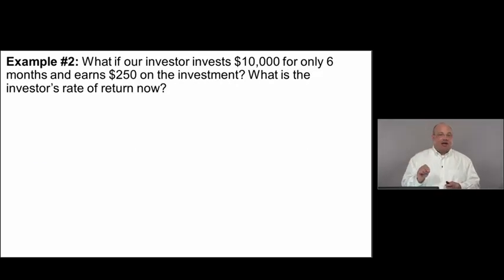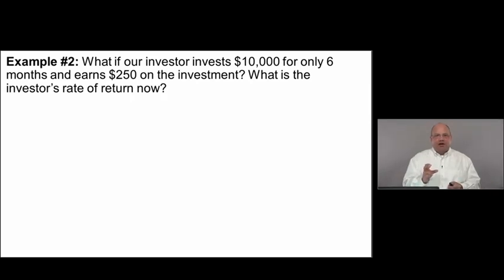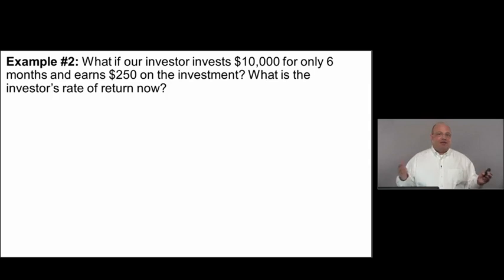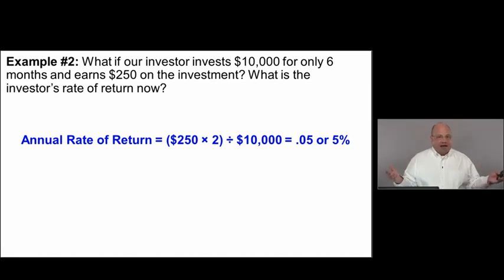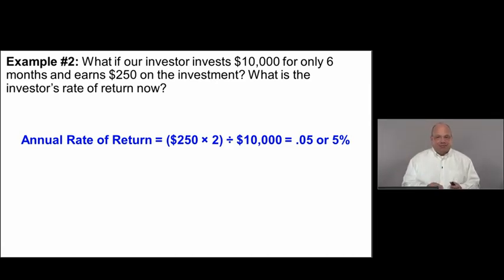In the second example, an investor invests $10,000 for only six months and earns $250. Since it's only six months, we take that $250 return and multiply it by two — because if they earned $250 over six months, they would have earned $500 over a full year. The average investment is still $10,000, and we assume that investment would be outstanding the entire year. So again, the rate of return is still 5%.